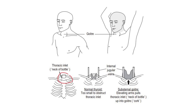when the patient raises his arms, it will pull the thoracic inlet up into the goiter, which is similar to inserting a cork into the neck of a bottle. This then compresses the nearby internal jugular veins, producing a positive Pemberton's sign.